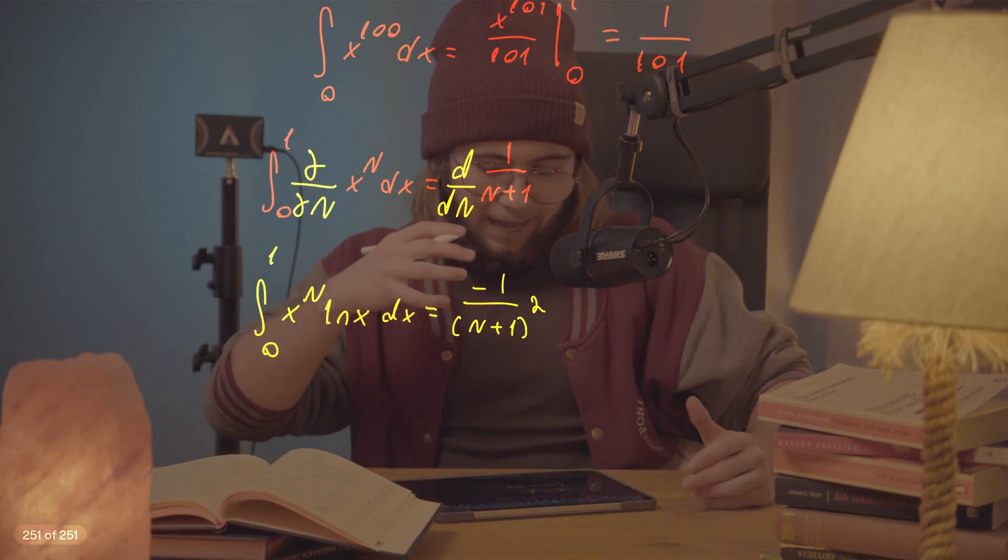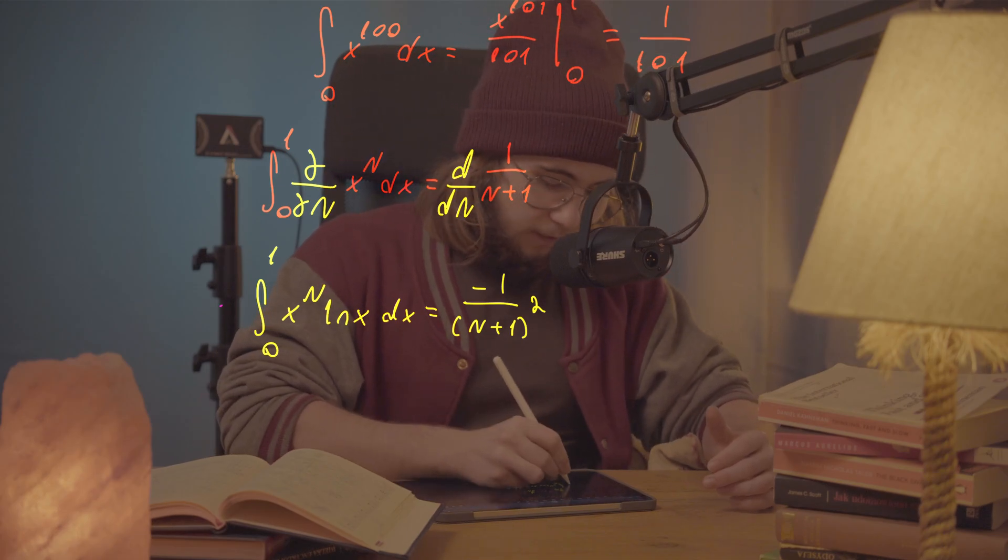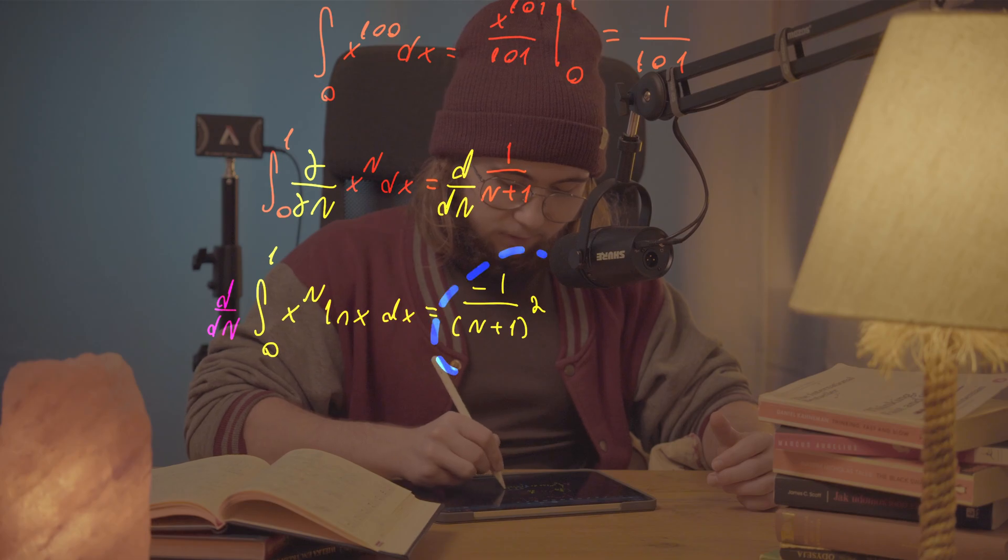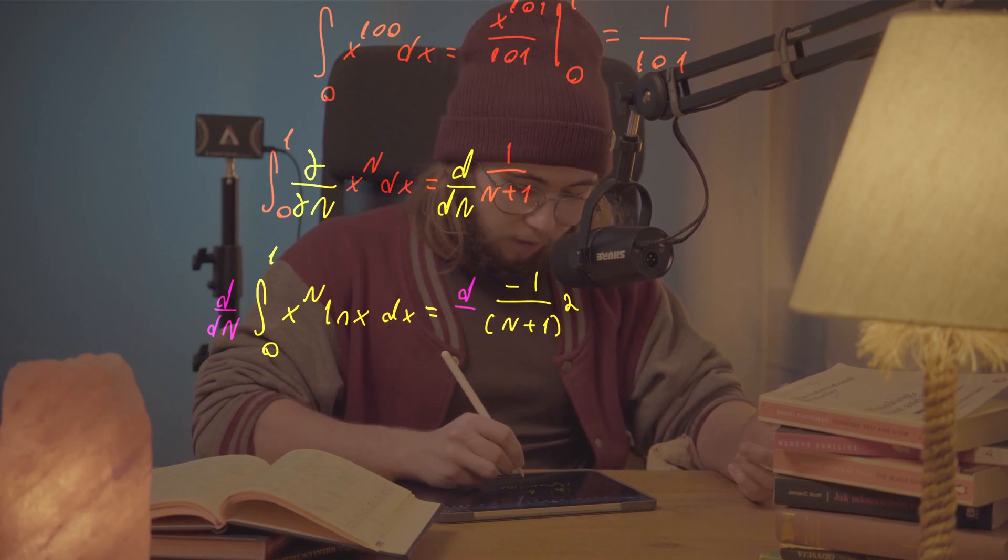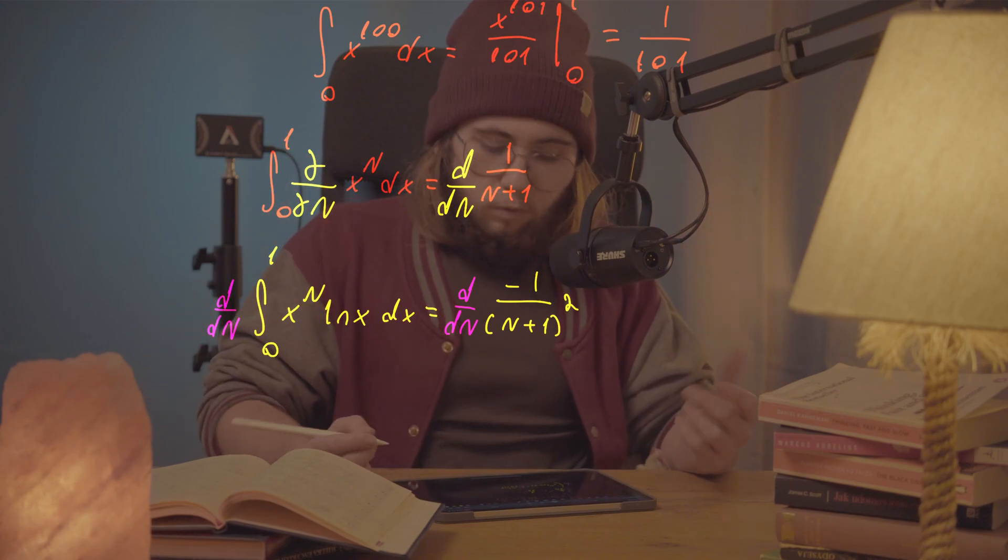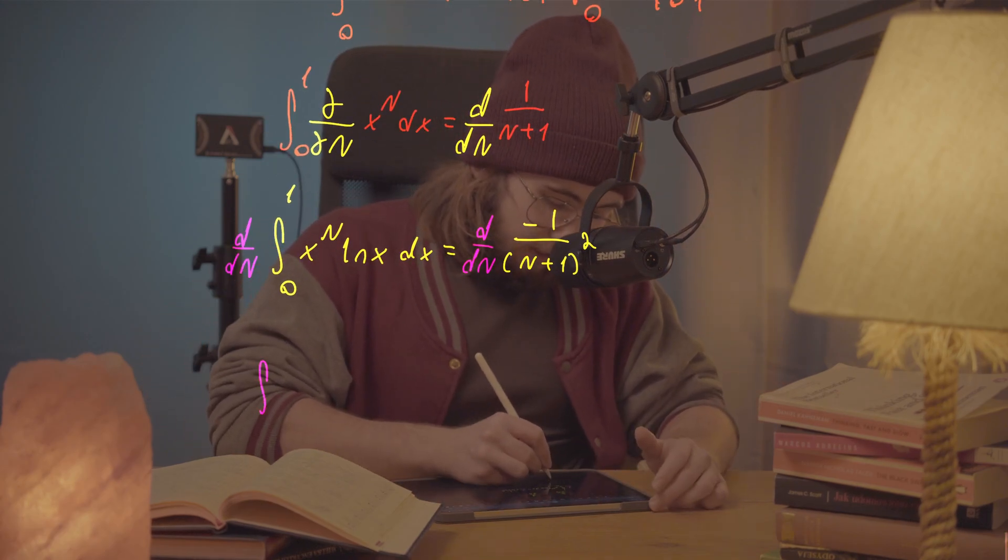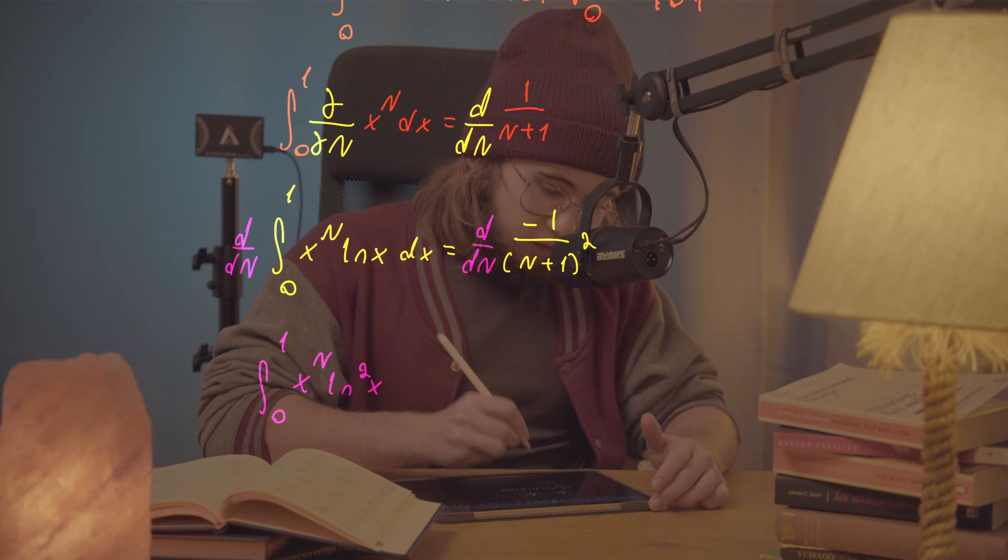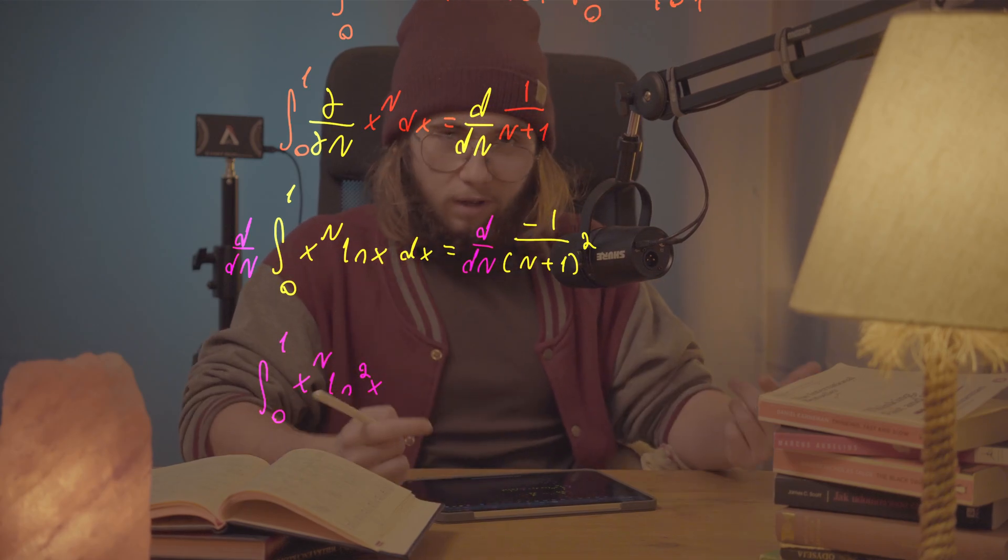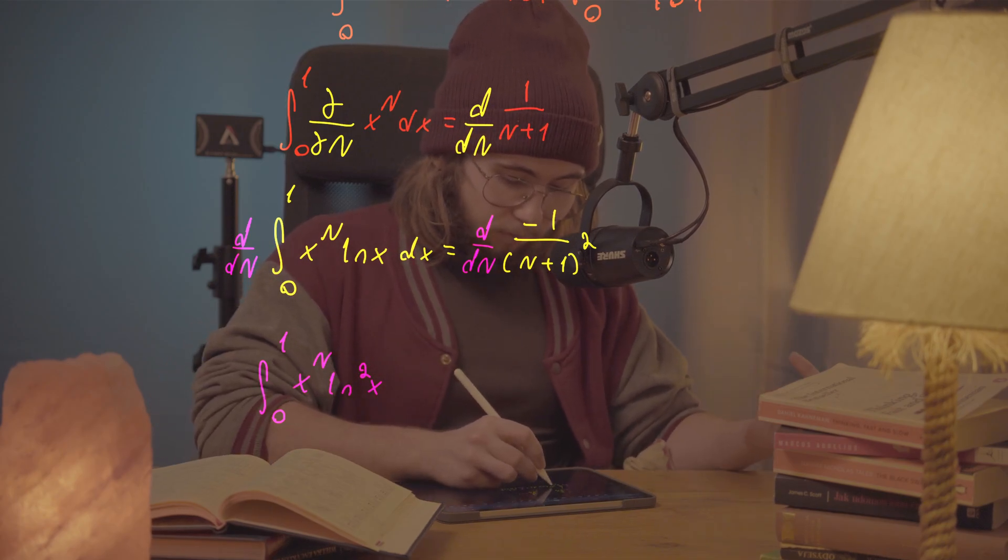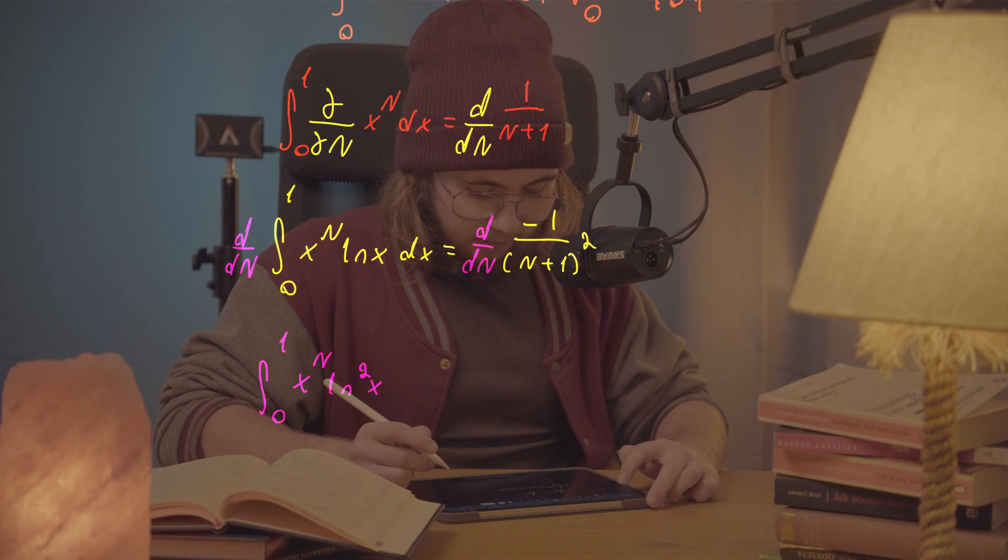What if we were to again differentiate both sides with respect to N? What we would be left with is the integral from 0 to 1 of x to the power of capital N times the natural log of x squared, the natural log squared of x, because we are multiplying this log that we already have by another that gets brought down from the N as well.